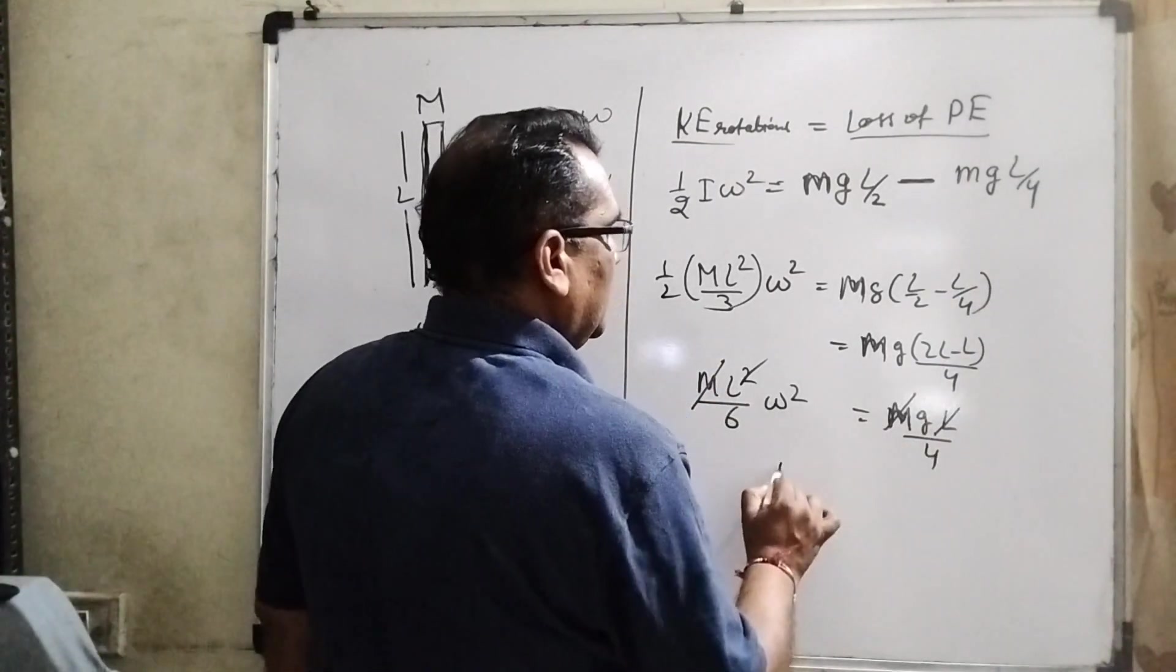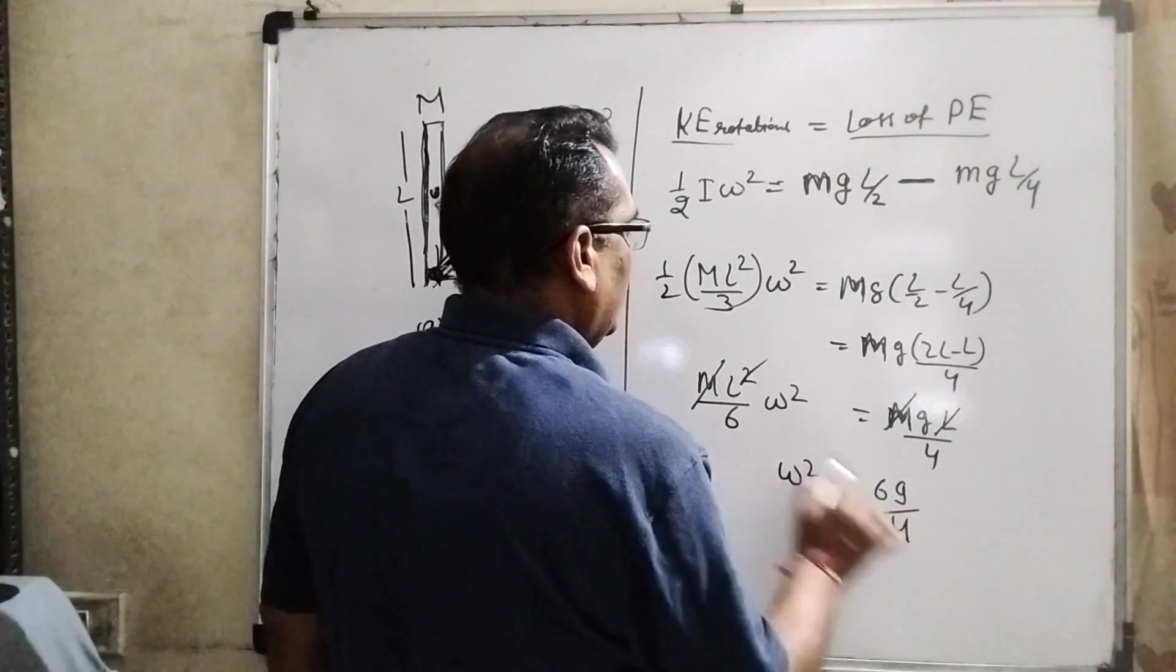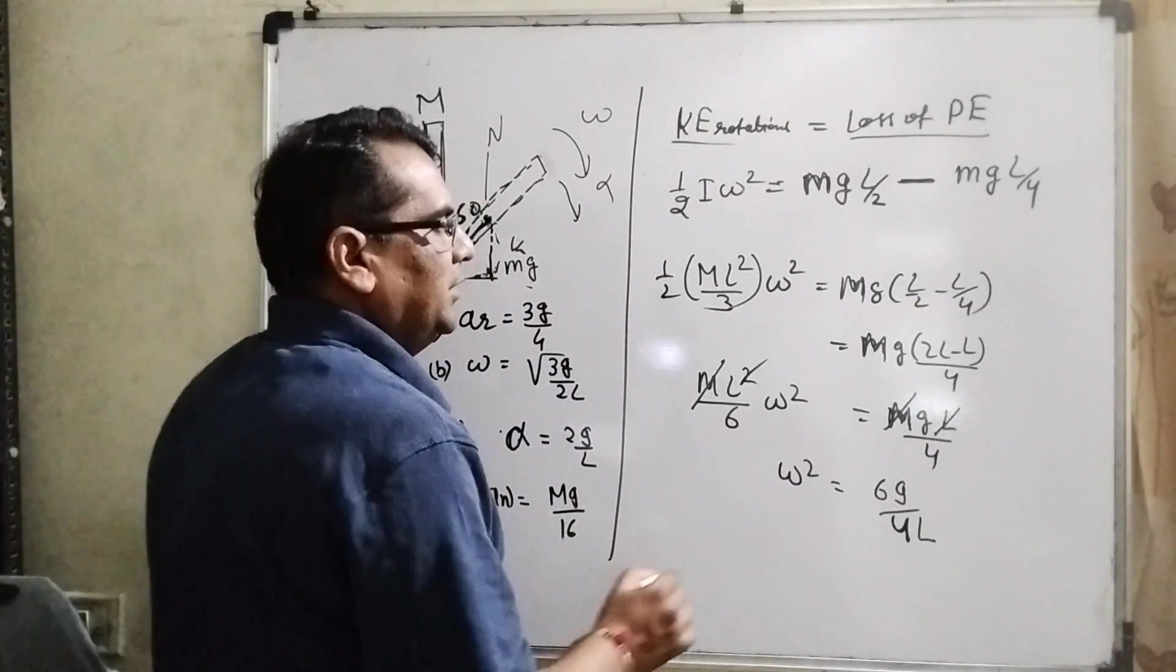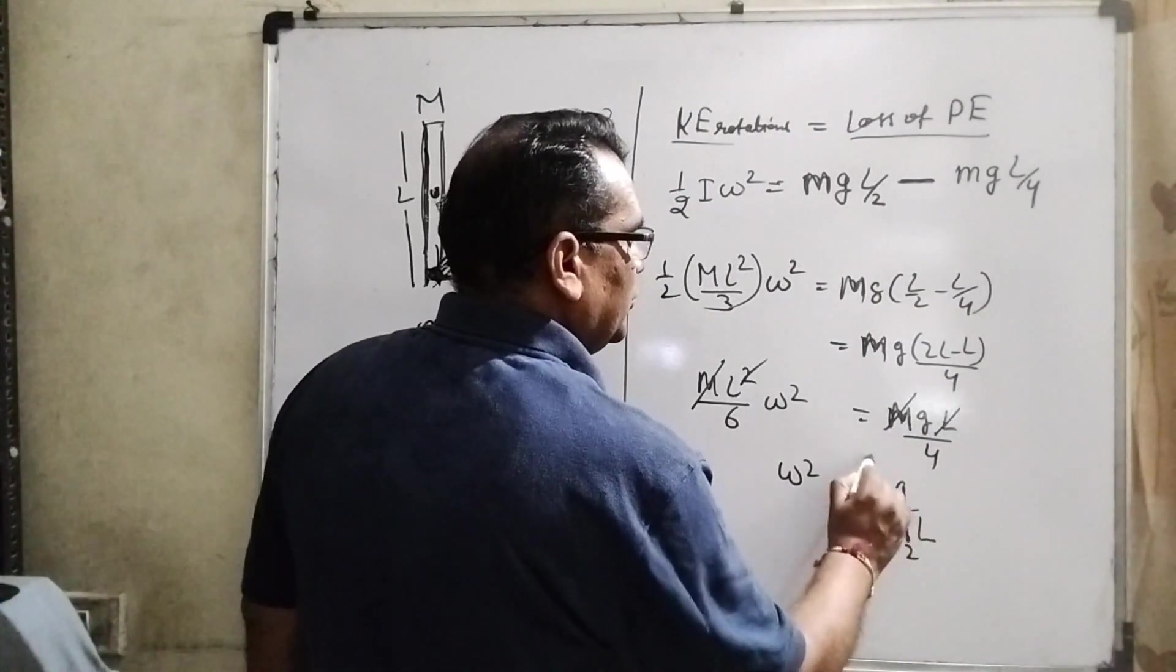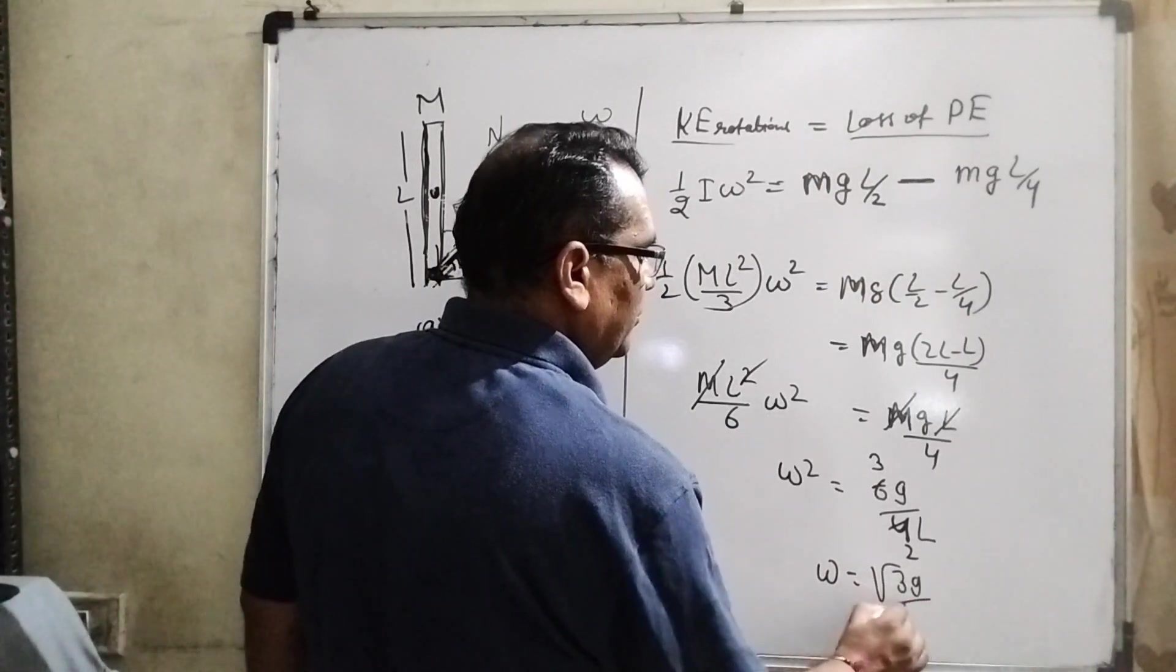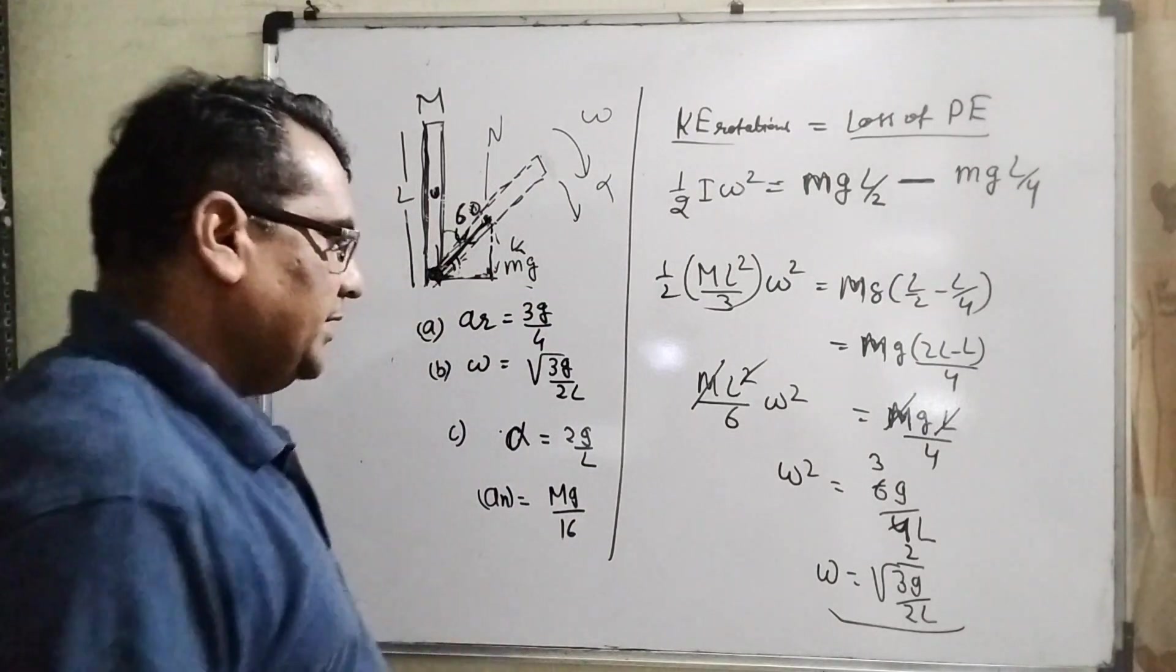Then M g, taking the LCM is 4, 2L minus L, then it becomes M g L by 4. Here capital M, capital M. And now here M L squared by 6 omega squared. L cancel out, M cancel out. Omega squared equal to 6g by 4, and this L shifted in denominator of right side.